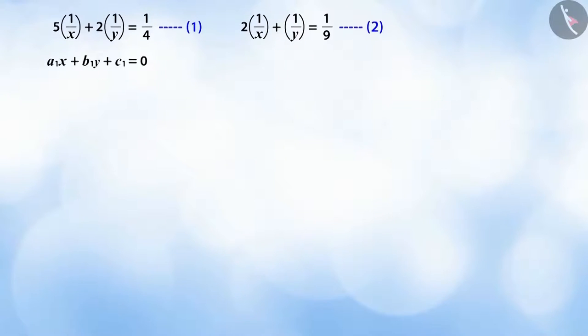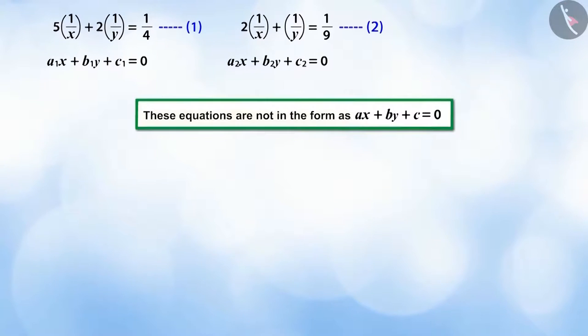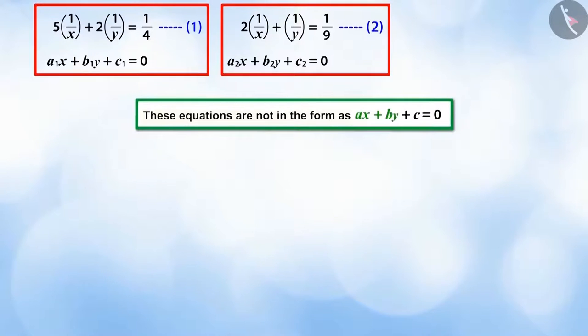If we write both these equations in the following manner, you can see that we get a pair of equations, but this is not in the form of linear equations, because the equation ax + by + c = 0 does not hold. This is why it becomes difficult to solve these equations. So let us see how this pair of equations can be solved easily.